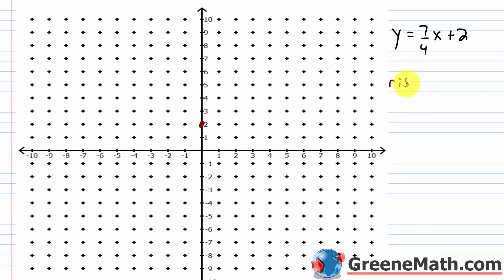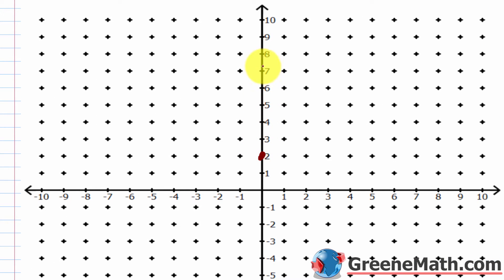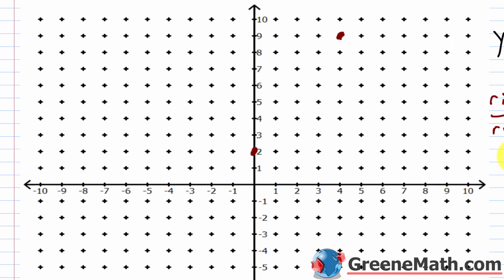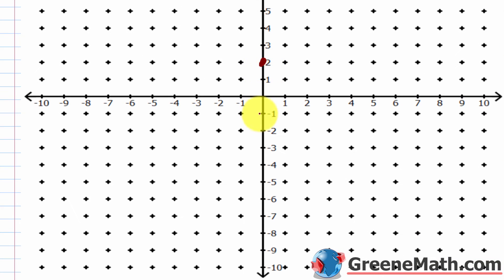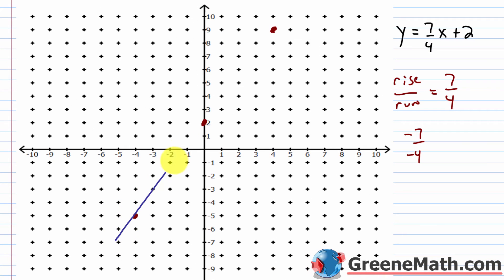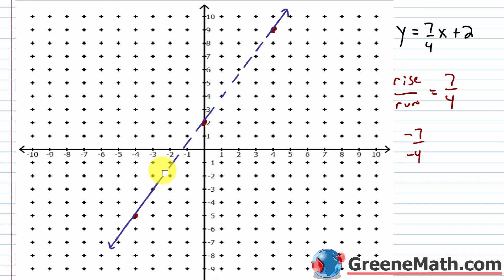The slope (rise over run) is 7 over 4. So from (0, 2), go up 7 and to the right 4 to get another point. I can also go down 7 and to the left 4 using the equivalent negative slope. I start by drawing a solid line, then take my eraser and break it up into a dashed line — just enough so your teacher can see it's broken, indicating the boundary line is not part of the solution.